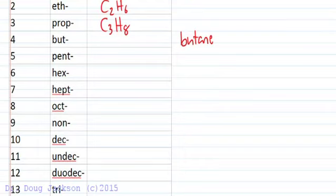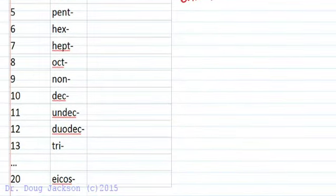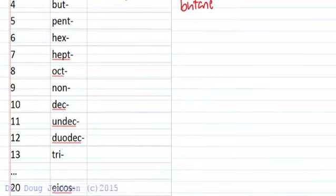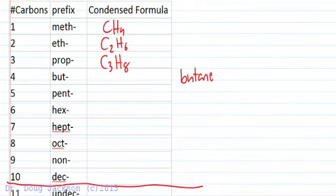And then we get to 11 and 12. Undecane, duodecane, tridecane, tetradecane - repeats the prefixes we learned before, all the way to 20, which is icosane. So that's a lot, but let's only learn, for my class, let's learn up to ten, shall we? For now. When organic chemistry rolls around, we'll get as many as you like.